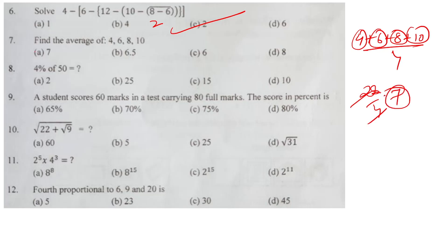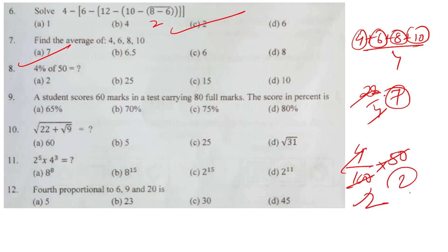So 7 is our correct answer. Question number 8: 4% of 15 — 4 multiplied by 4 by 2, so option number A is the correct answer.